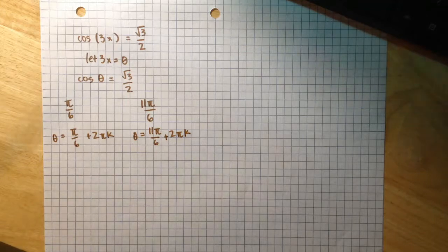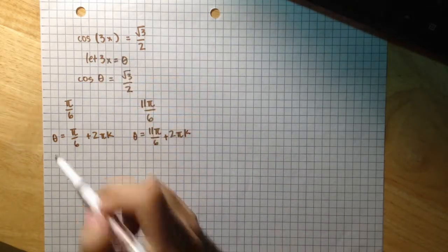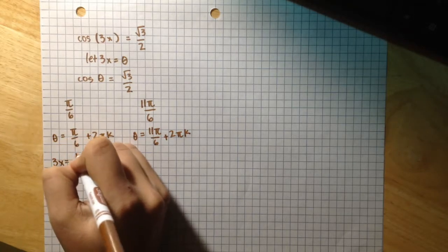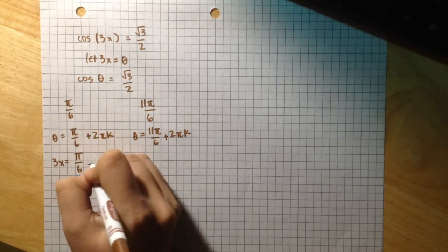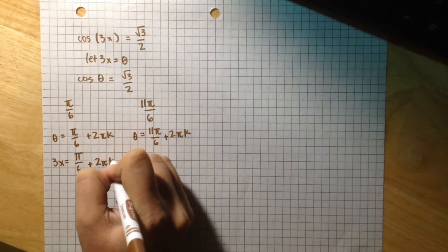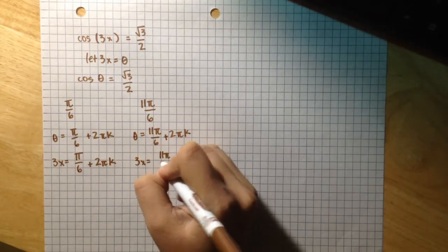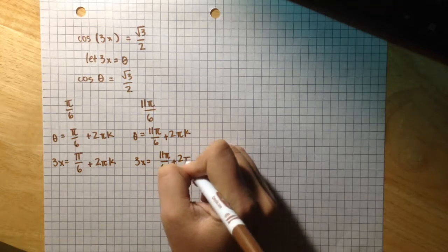I'm going to substitute 3x back here where theta is, so 3x equals π over 6 plus 2π k, and 3x equals 11π over 6 plus 2π k.